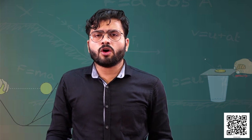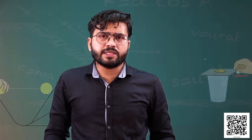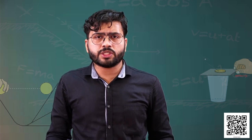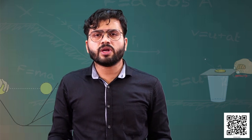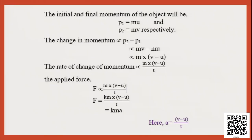Consider an object of mass m moving along a straight line with an initial velocity u. It is uniformly accelerated to a final velocity v in time period t by the application of a constant force F throughout the time t. The initial momentum is p₁ = mu and the final momentum is p₂ = mv.